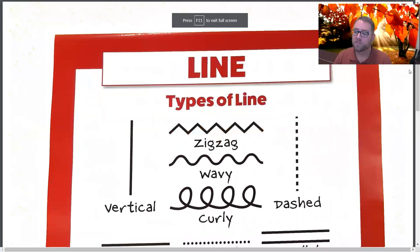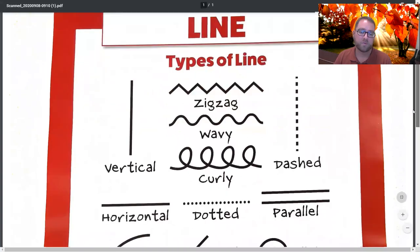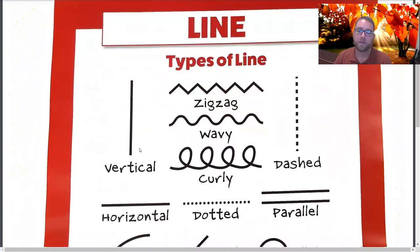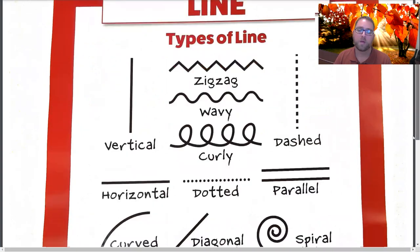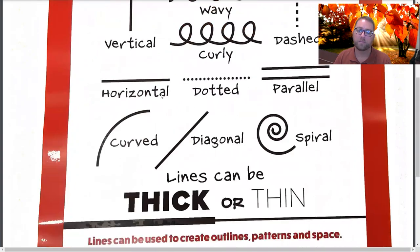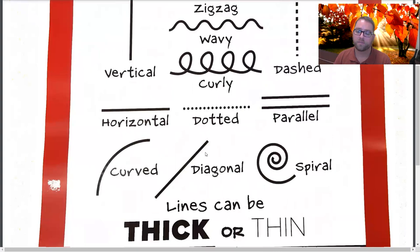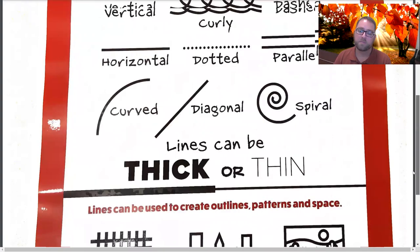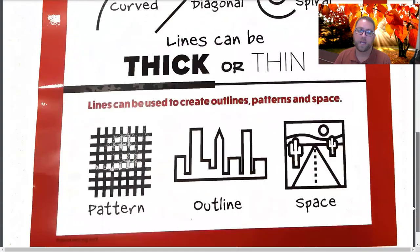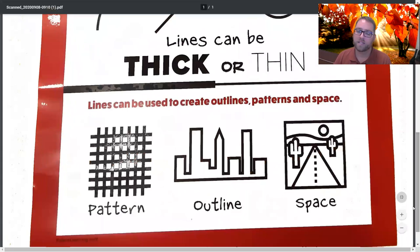Here on the screen you can see different types of line. There are many different types of lines. We have vertical lines that go up and down, zigzag lines, wavy lines, curly lines, dashed lines, horizontal lines left to right, dotted, parallel, curved, diagonal, spiral. Lines can be both thick or thin, and lines can be used to create outlines, patterns, and space.